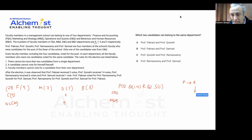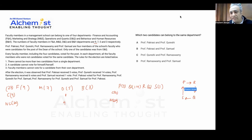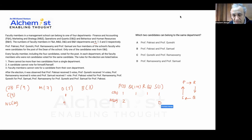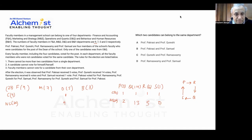Ramaswami voted for Kurishi, and Samuel voted for Prakashi. So every candidate gets exactly one vote from another candidate — one each. That means the non-candidate votes for Prakashi are two, for Samuel are zero, for Ramaswami are five, and for Kurishi are thirteen. This is the data we are working with.